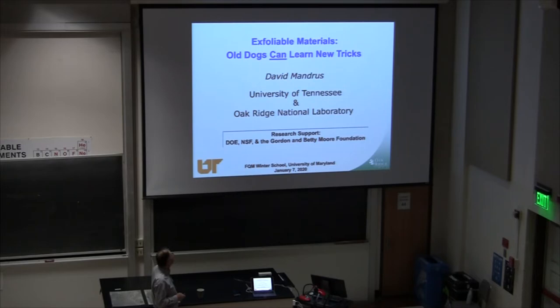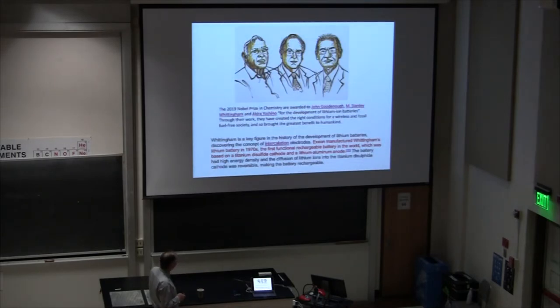The point is that these materials we're going to talk about, they are old dogs. They've been around for a long time, particularly true because the Nobel Prize in Chemistry was awarded to Goodenough, Whittingham, and Yoshino for the discovery of lithium ion batteries. If you read about Whittingham, he actually worked on titanium disulfide batteries. Exxon manufactured these batteries in the 1970s, so titanium disulfide certainly would qualify as one of the kinds of materials we're going to talk about.